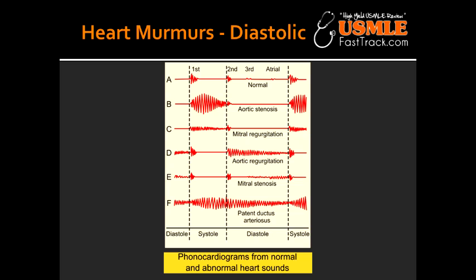What are some of the conditions that can lead to aortic regurgitation? Aortic regurgitation can happen due to aortic root dilation, bicuspid aortic valve, endocarditis, or rheumatic fever.